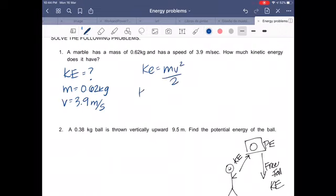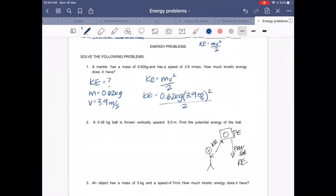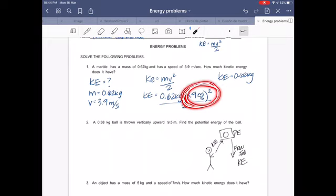Kinetic energy equals your mass, which is 0.62 kilograms, times 3.9 meters per second squared, divided by two. You already know that kinetic energy equals, here you put the 0.62 kilograms, and the first thing you need to do is this part right here, the squared.